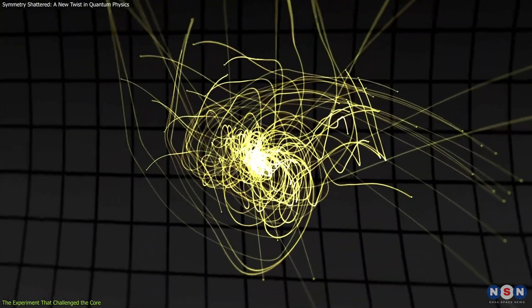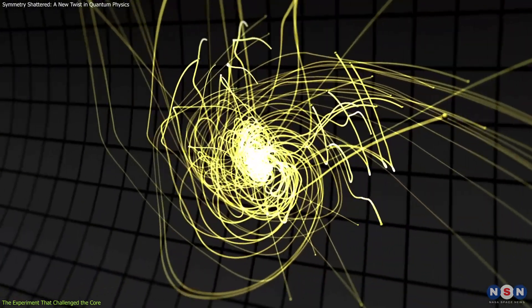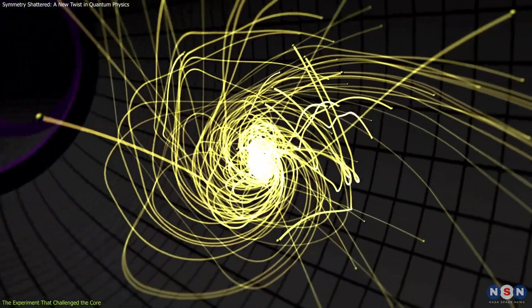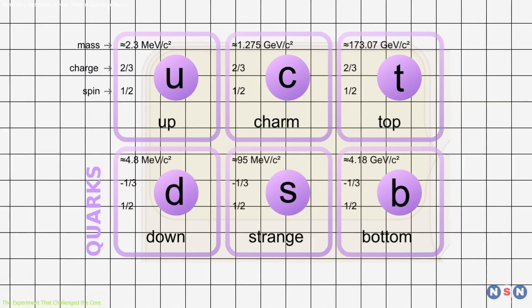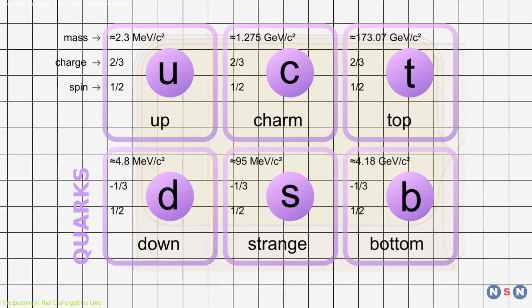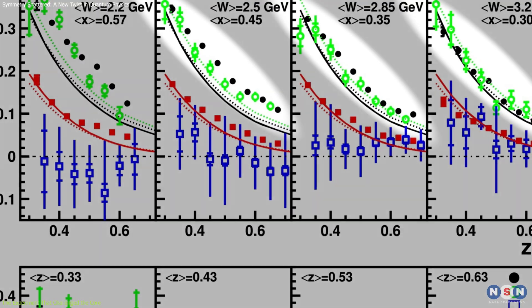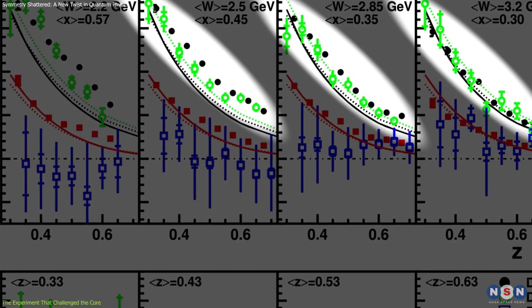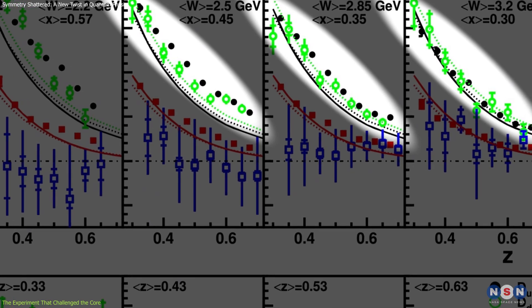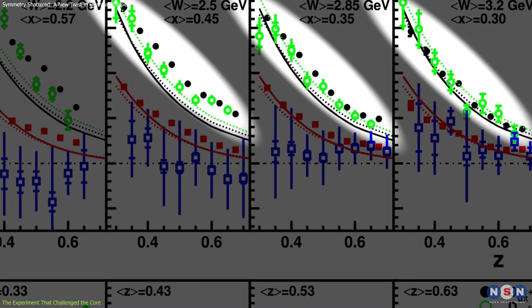The fragmentation functions, which describe the probability of a quark transforming into a particular type of pion, showed a dependence on the flavor of the quark and the energy levels involved. At higher energies, the fragmentation functions appeared to be flavor independent, aligning with the principle of symmetry.